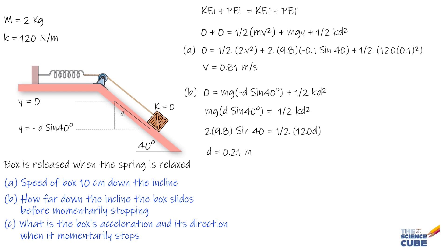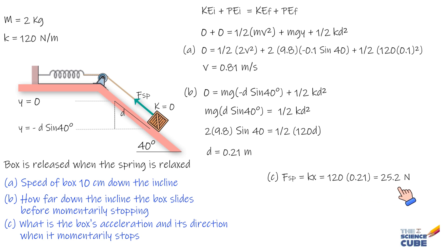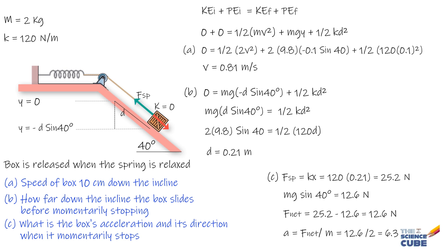For part C, the box is pulled up by the stretched spring with force magnitude kx, where x = 0.21 m. This force equals 25.2 N. The downhill force is a component of gravity, mg sin 40°, which equals 12.6 N. The net force on the box is 25.2 − 12.6 = 12.6 N uphill. Therefore, acceleration a = F/m = 12.6/2 = 6.3 m/s² up the incline.